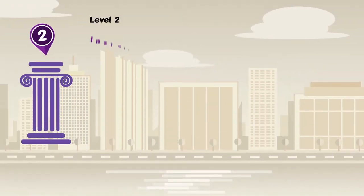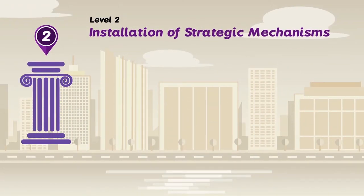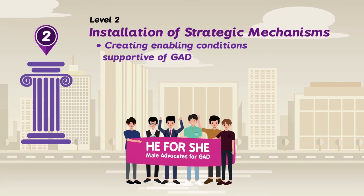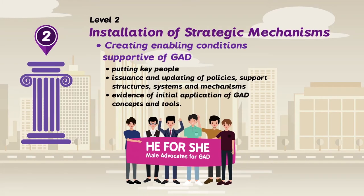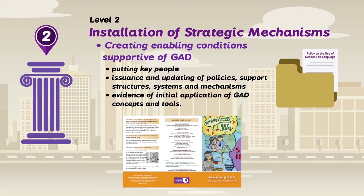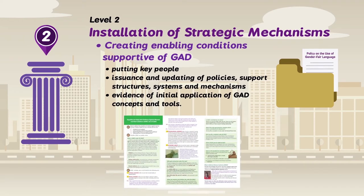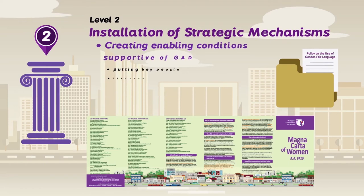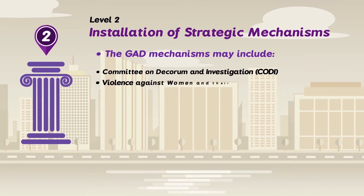Level 2: Installation of Strategic Mechanisms. This level marks the transition of the organization toward gender mainstreaming by creating enabling conditions supportive of GAD, such as putting in key people, issuance and updating of policies, support structures, systems and mechanisms to facilitate and sustain gender mainstreaming, as well as evidence of initial application of GAD concepts and tools.